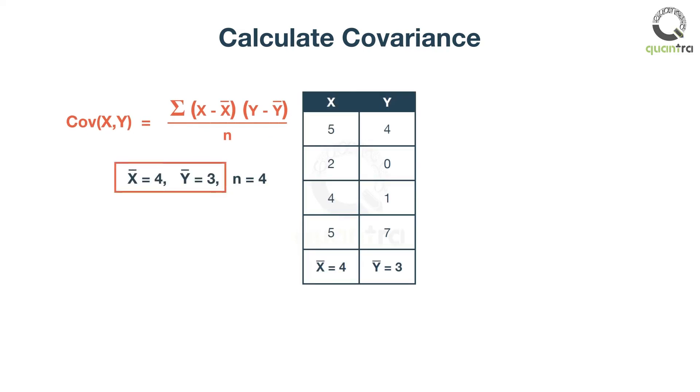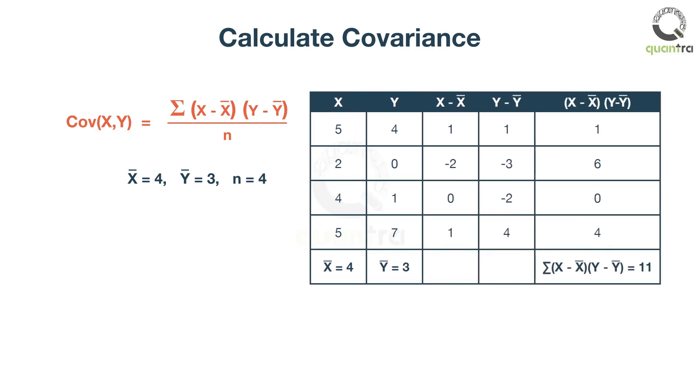X bar and Y bar represent the mean values of the respective series, and n, the number of values in either of the series. If you substitute these values in the formula, the value of covariance comes out to be 2.75.